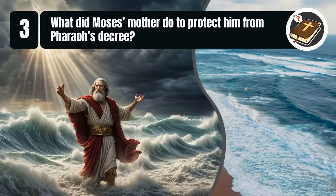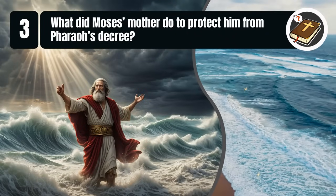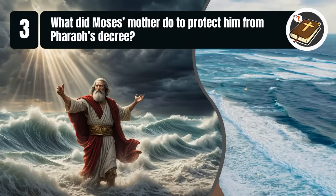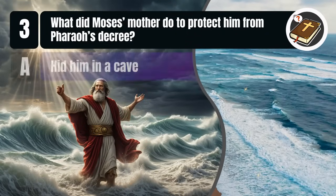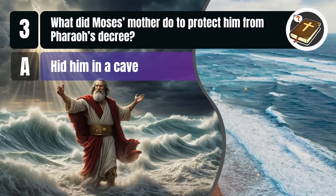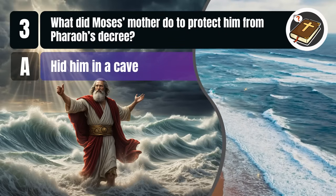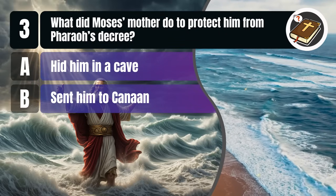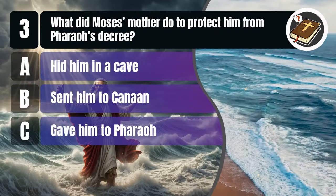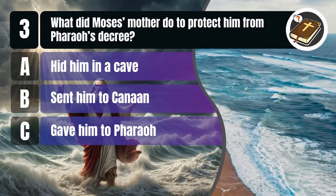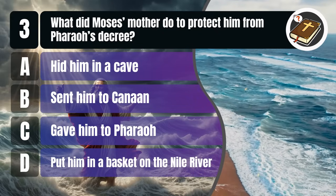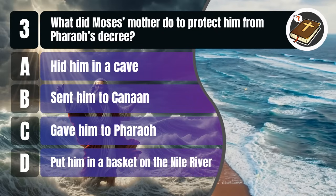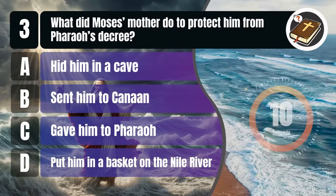Question 3. What did Moses' mother do to protect him from Pharaoh's decree? A. Hid him in a cave, B. Sent him to Canaan, C. Gave him to Pharaoh, D. Put him in a basket on the Nile River. You get 10 seconds.